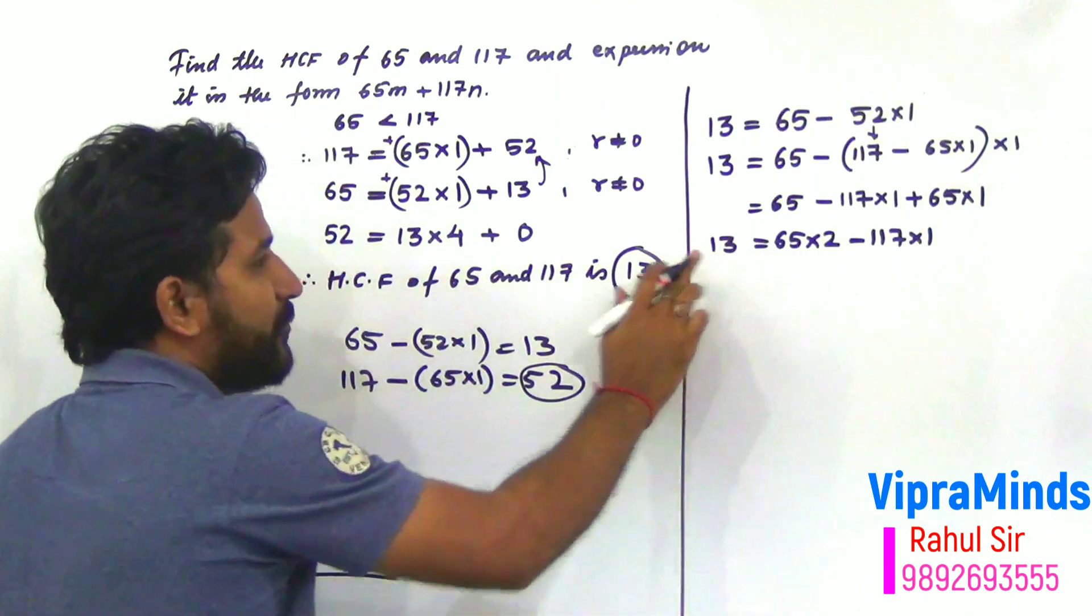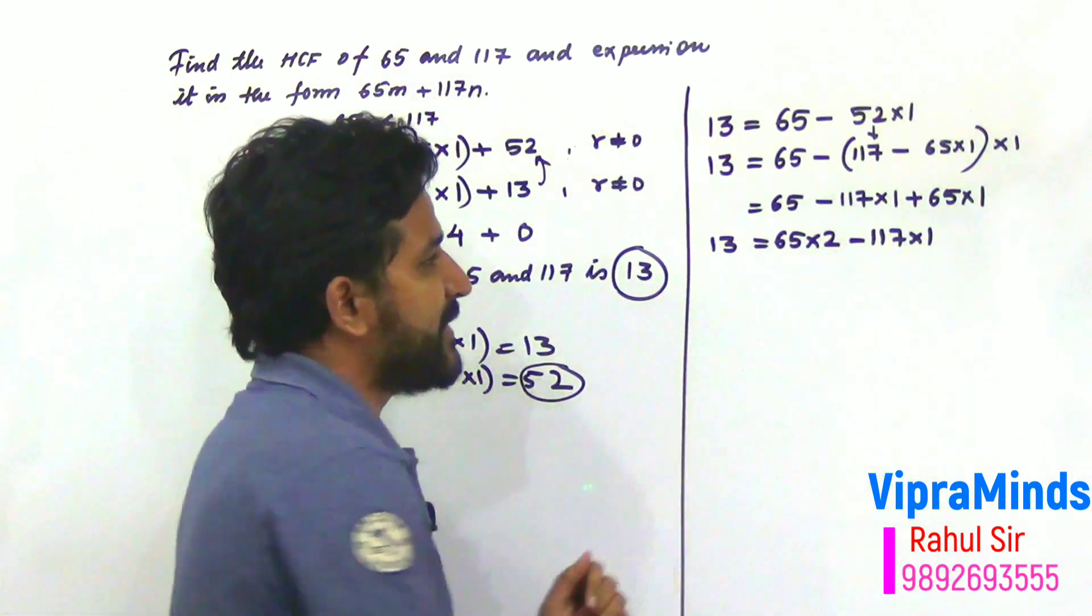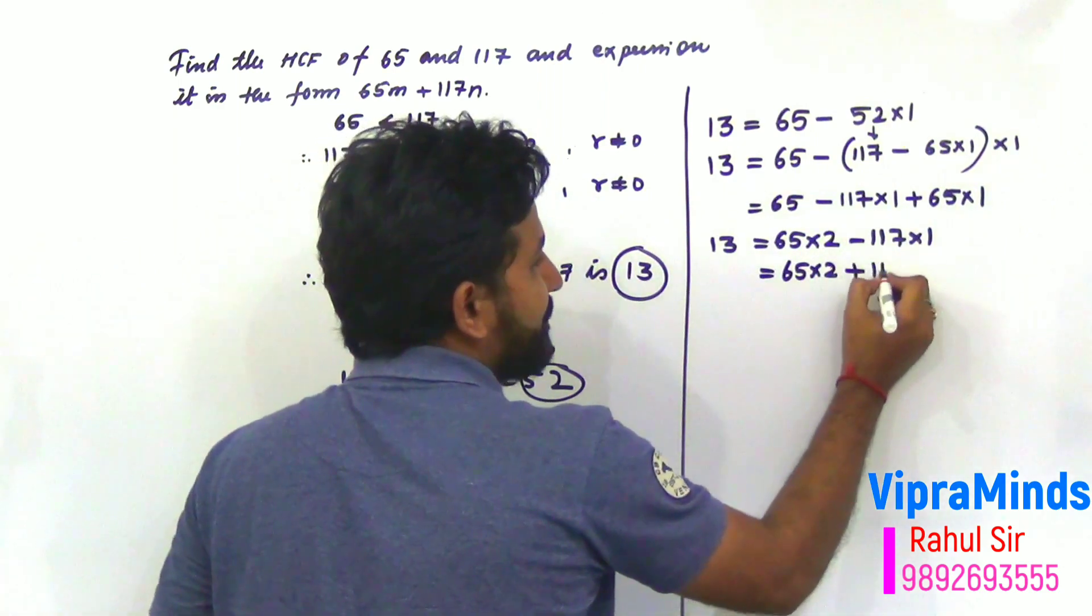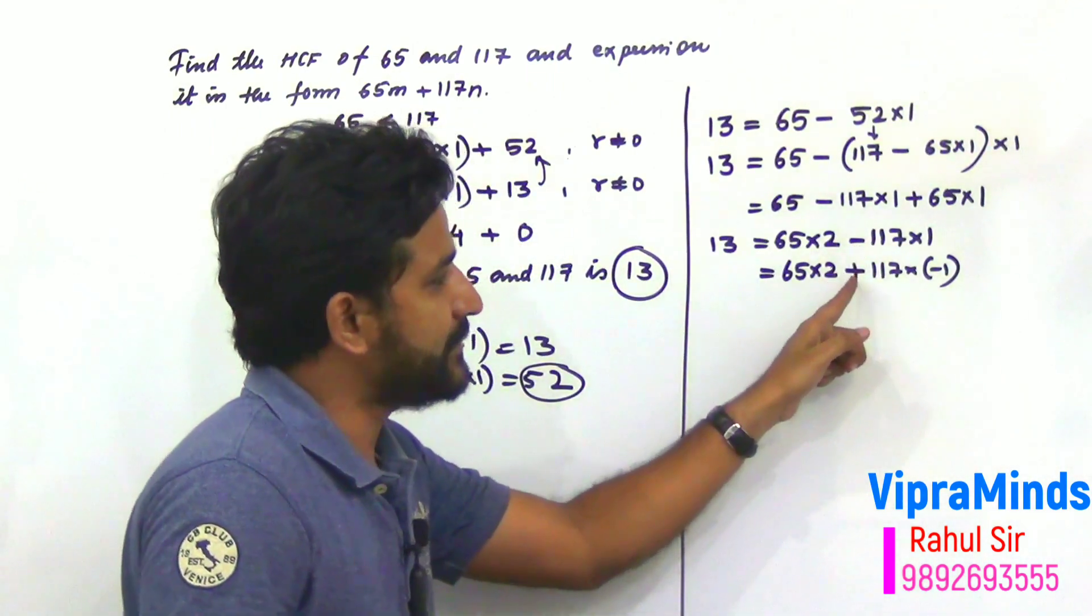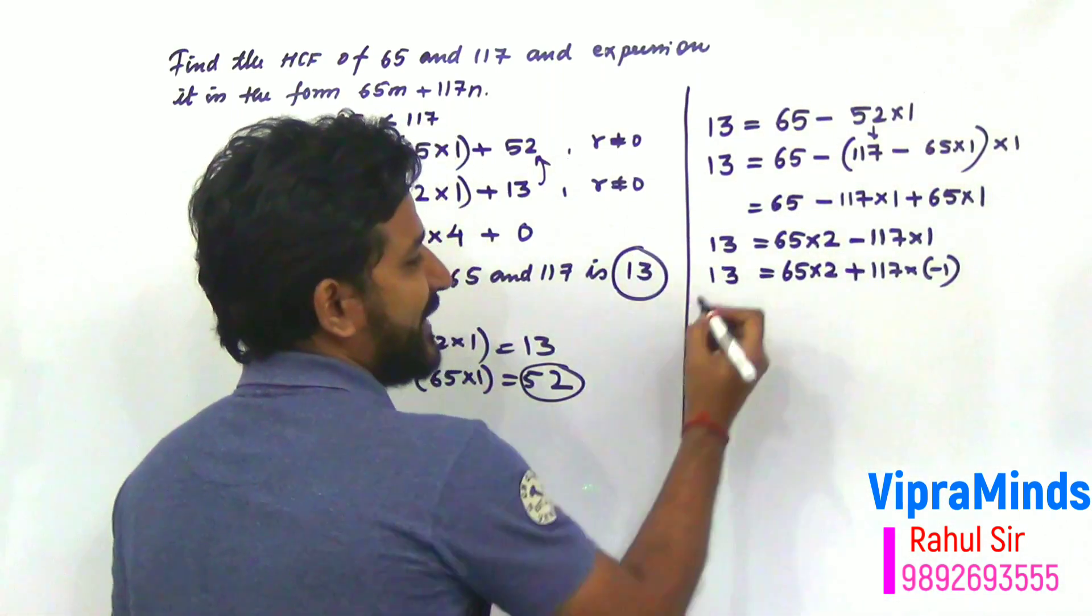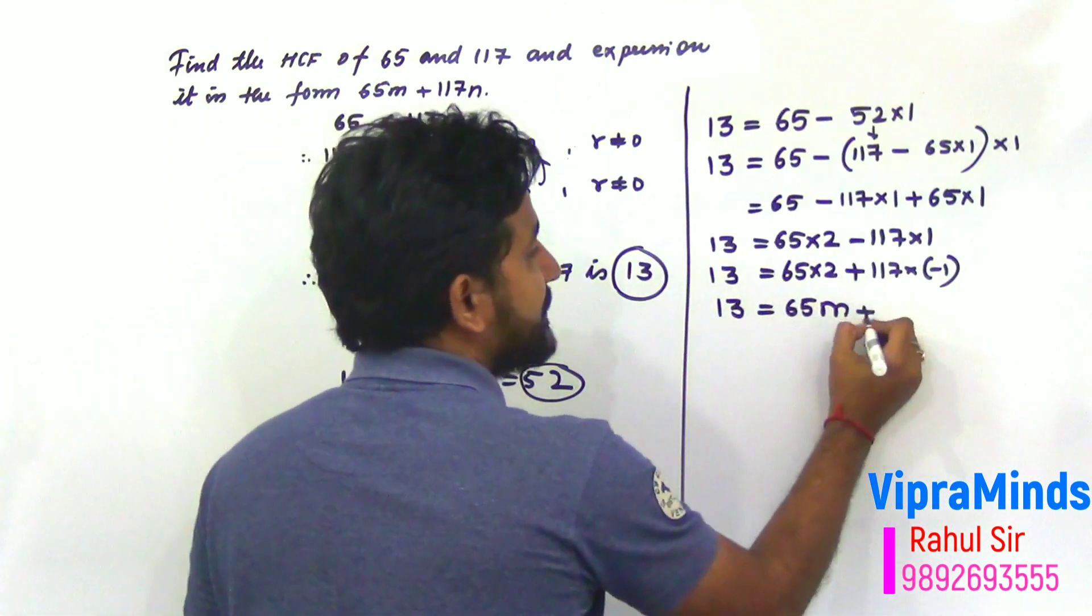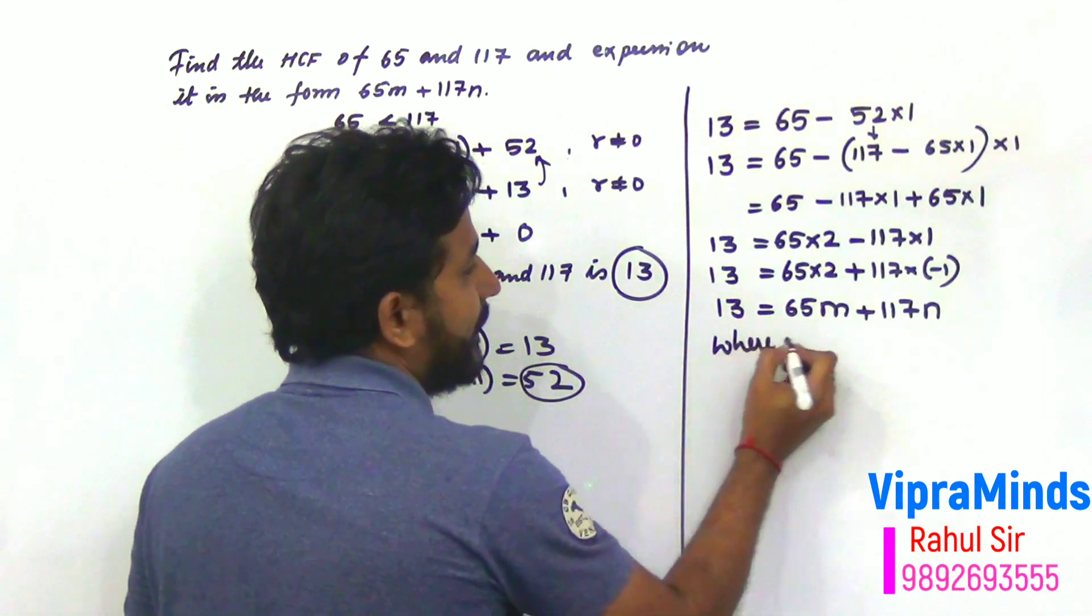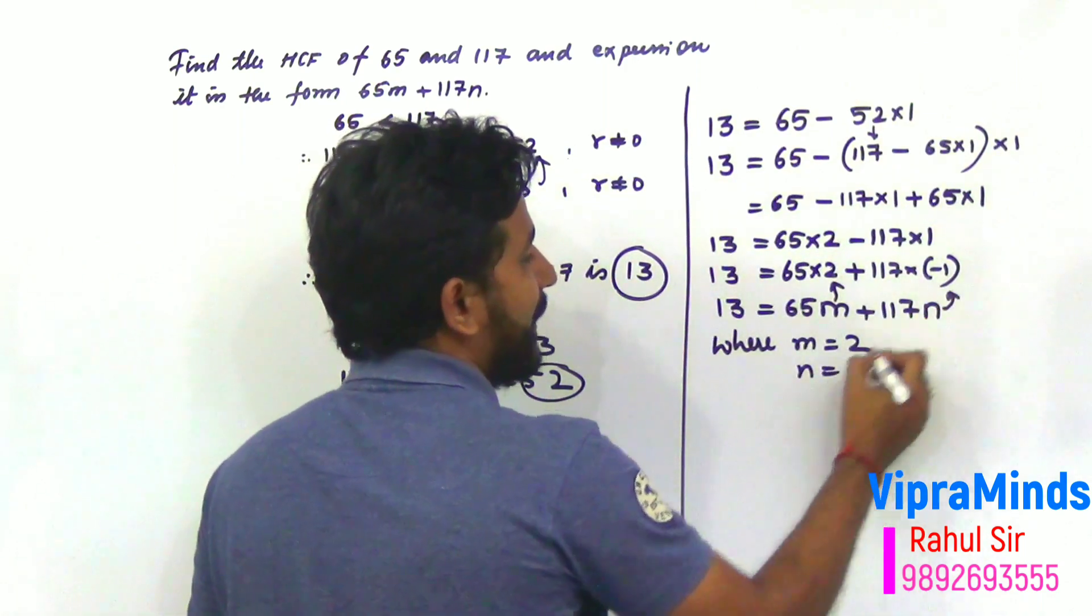It is 65 into 2 minus 117 into 1. So, HCF is 13 and finally we got values whose HCF we had to find, that is 65 and 117. Now I will represent this in plus form. 65 into 2, I can write as plus 117 into minus 1. Because plus into minus is minus. We can write this step as plus 117 into minus 1. Next step, 13 equals to 65M. In the place of 2, I can write M plus 117 into N. Where M value is 2 and N value is minus 1.